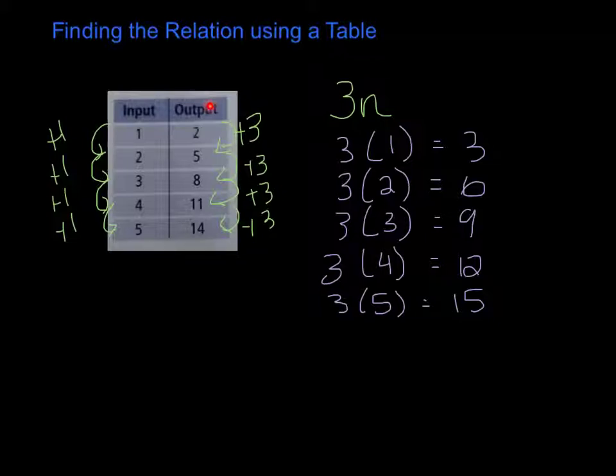So how do I get from 3 here to 2? I subtract 1. How do I get from 6 here to 5? I'm subtracting 1. So I'm noticing that if I subtract 1 from each of these solutions, I am coming up with the output in my original table. So therefore, my expression then becomes 3n subtract 1.